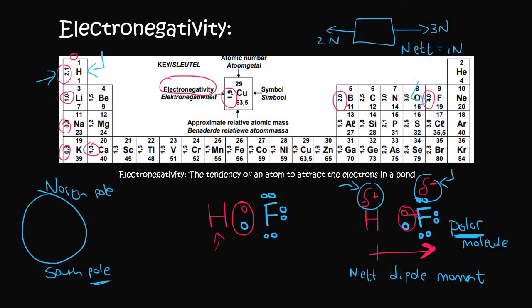So now we have a positive and a negative side, which is the same as having a north and a south, and so we can call it a polar molecule. We can then use an arrow to show the direction that the electrons are going, and then we can say that this molecule does have a net dipole moment. That's the same as saying that it has a net force.